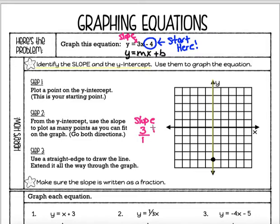Positive 3 on the top tells me I am going up 3. Positive 1 on the bottom tells me I'm going 1 to the right. So I'm going to this initial point — my y-intercept — this is where I'm starting. I'm going to count 3 spaces up, 1 over to the right, put a point. Count up 3, 1 to the right, put a point. I'm going to do that as many times as I can fit on this graph.